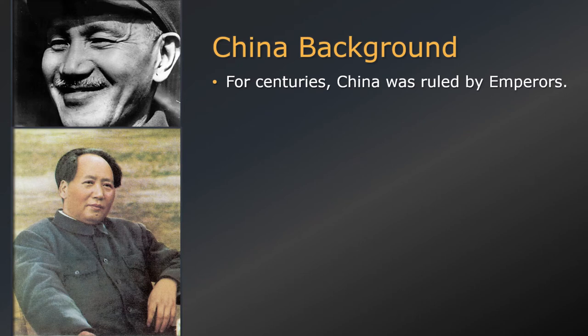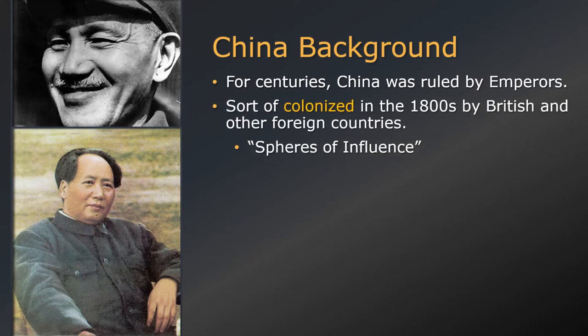Let's start with some background about China. For a long time, China was ruled by emperors, and you'll remember from other history classes hearing of different dynasties in China. During the 1800s, China was really controlled — sort of colonized — by Europeans and other countries. The United States got in on that as well. This type of economic colonization was called spheres of influence.